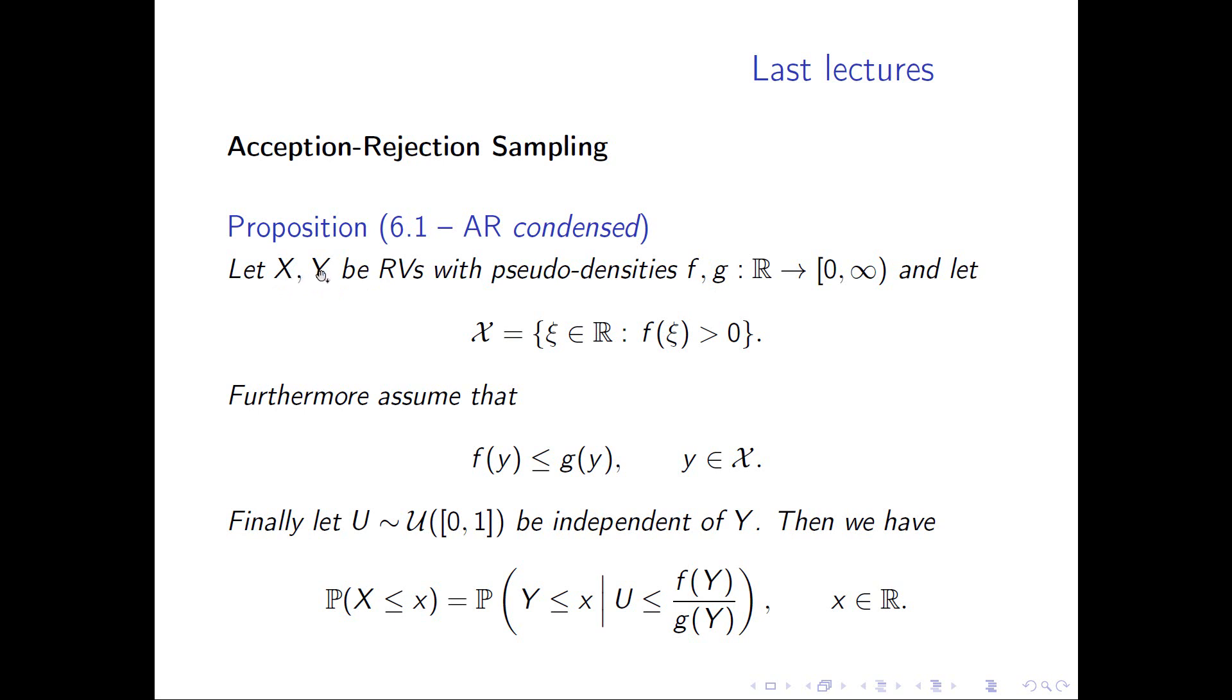We need a bit of notation. 𝒳 is the support of the density f. The pseudo density g has to be chosen in such a way that g dominates f. So we can sample from Y. Y corresponds to g, we want to sample from X which corresponds to f. Then here we have acceptance-rejection sampling in a nutshell.